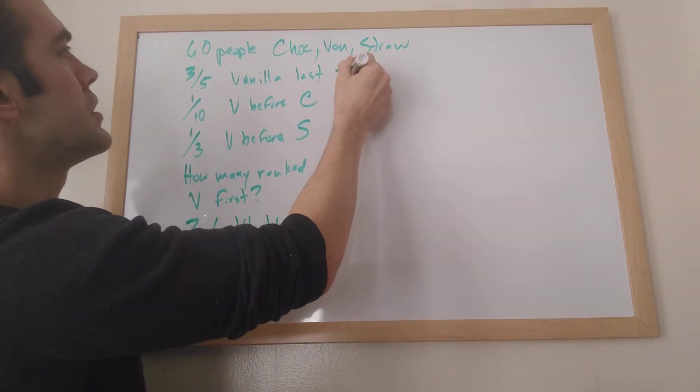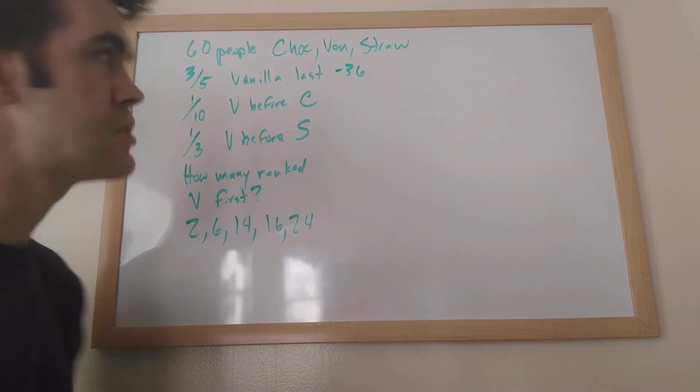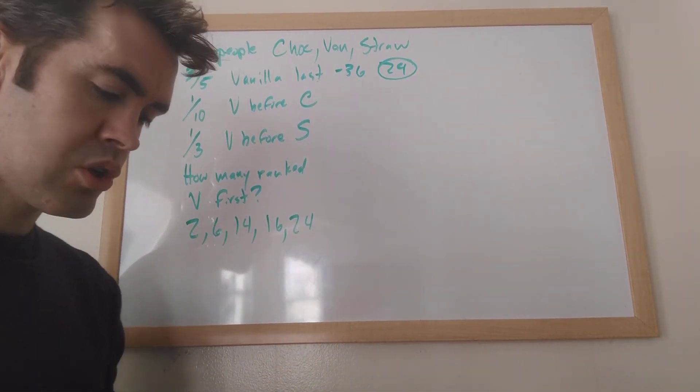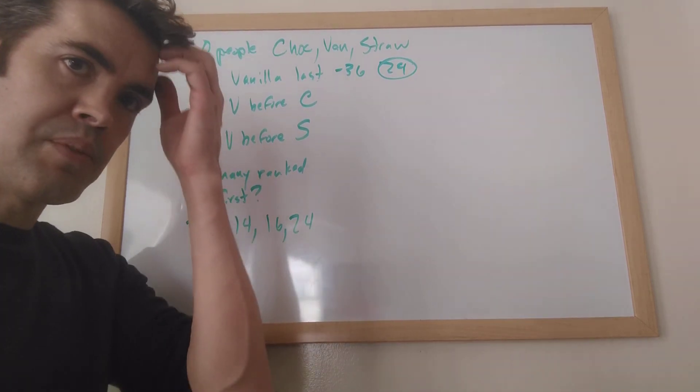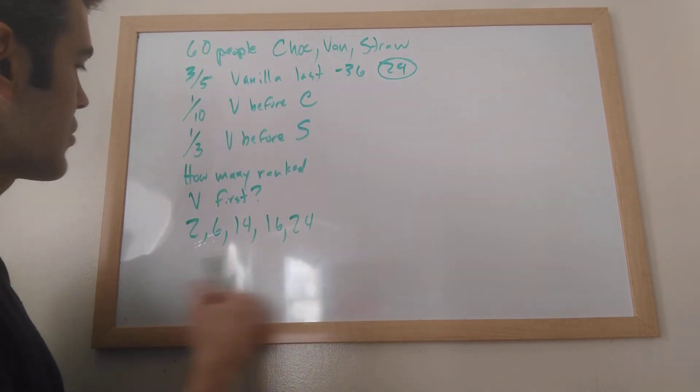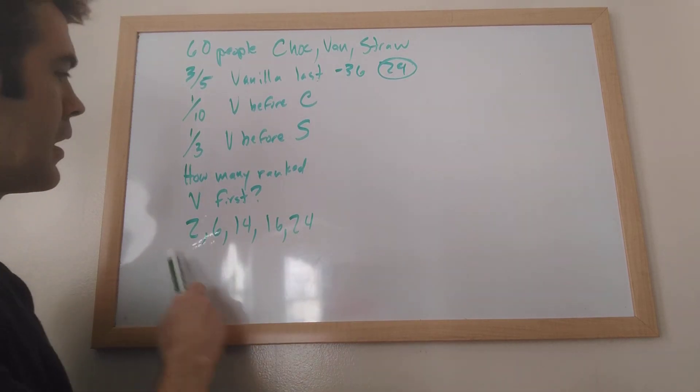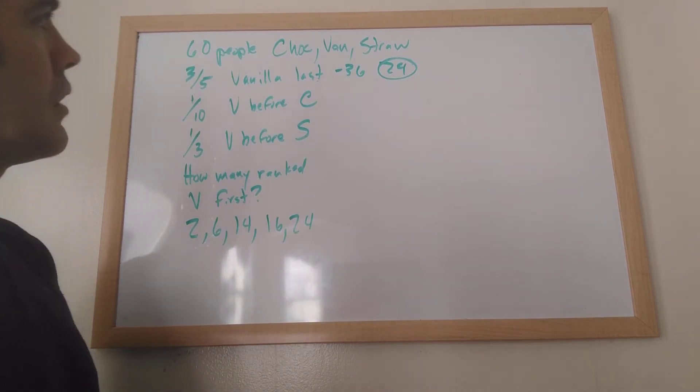So that means that 36 is 36 people, which means we have 24 people left. We have 24 people who could have ranked it first. Now, I might do a quick scan and look at the answer choices. Hopefully I can eliminate a few, but I can't because they're all under 24. Good idea to do a scan though.